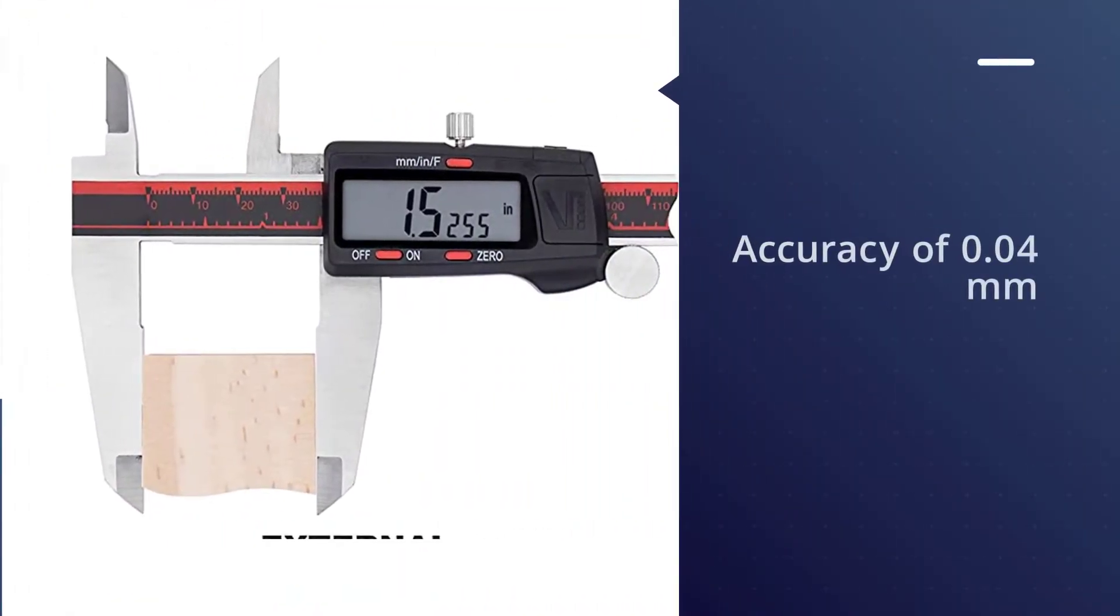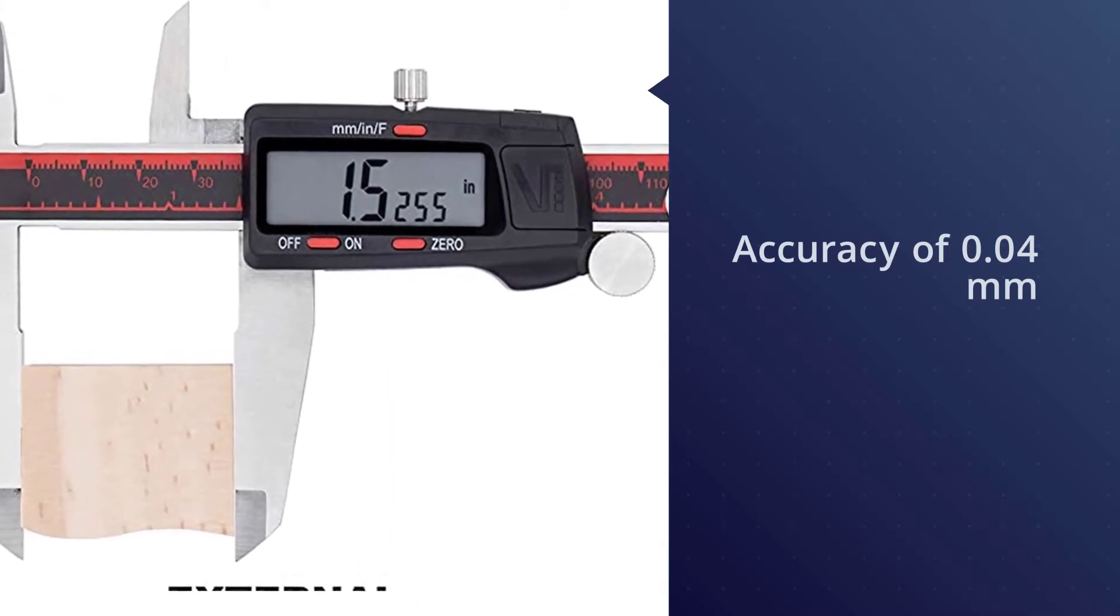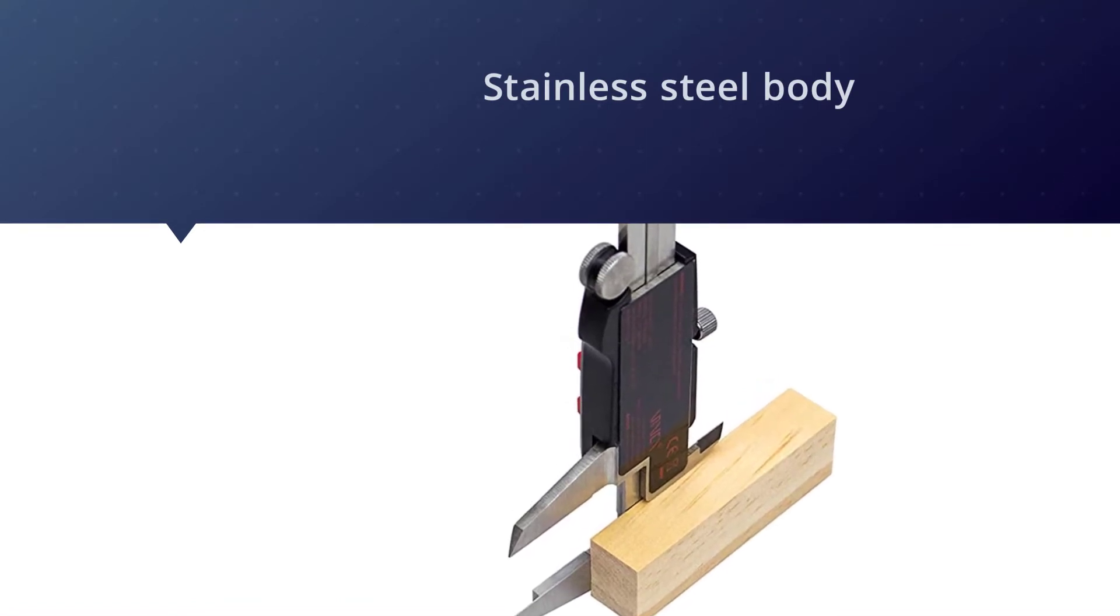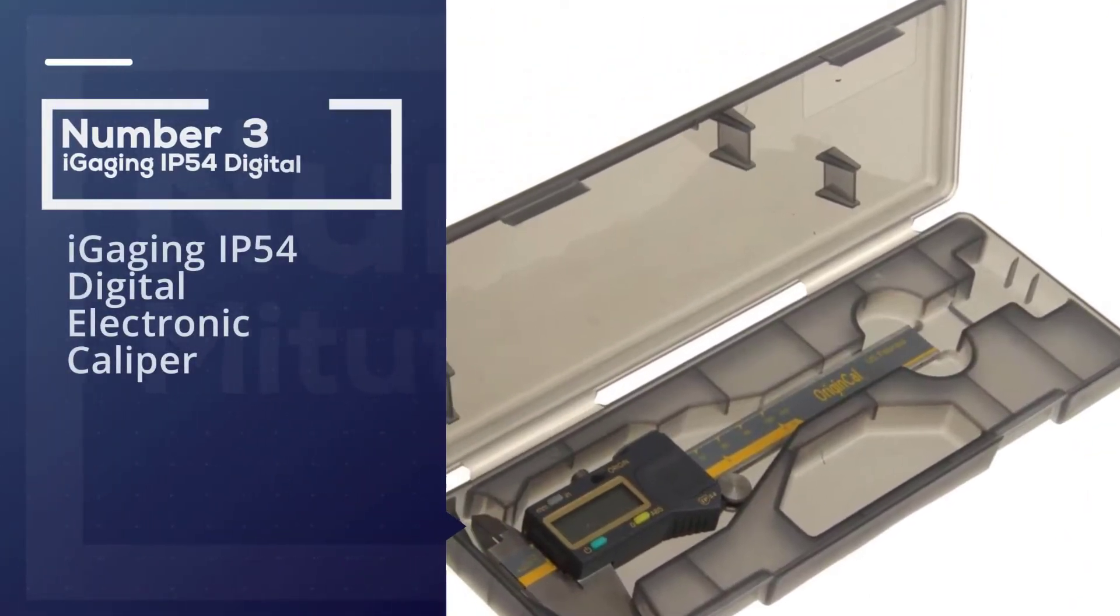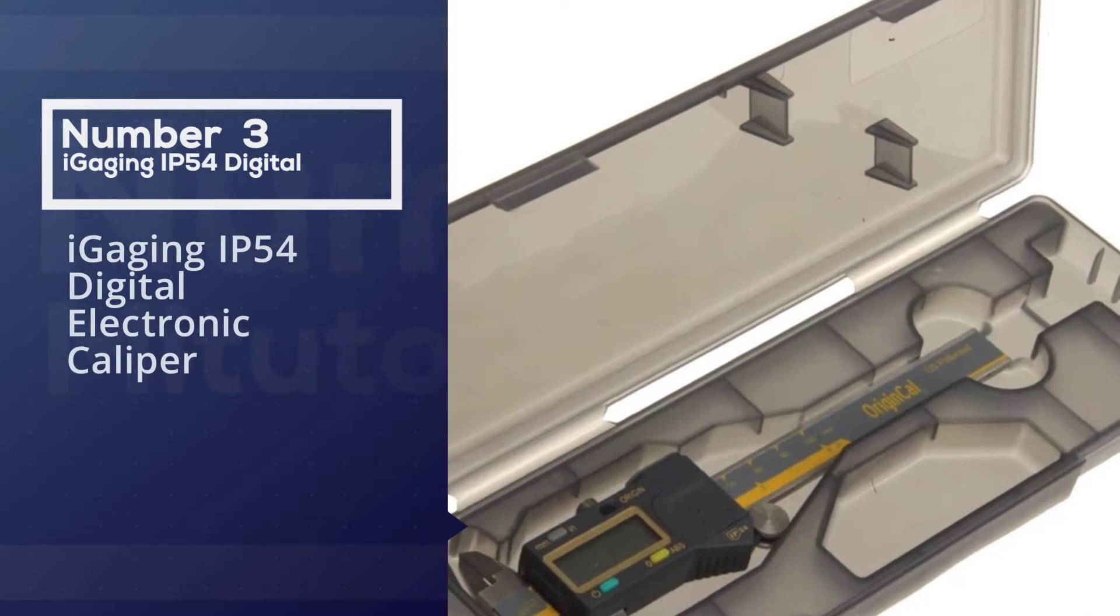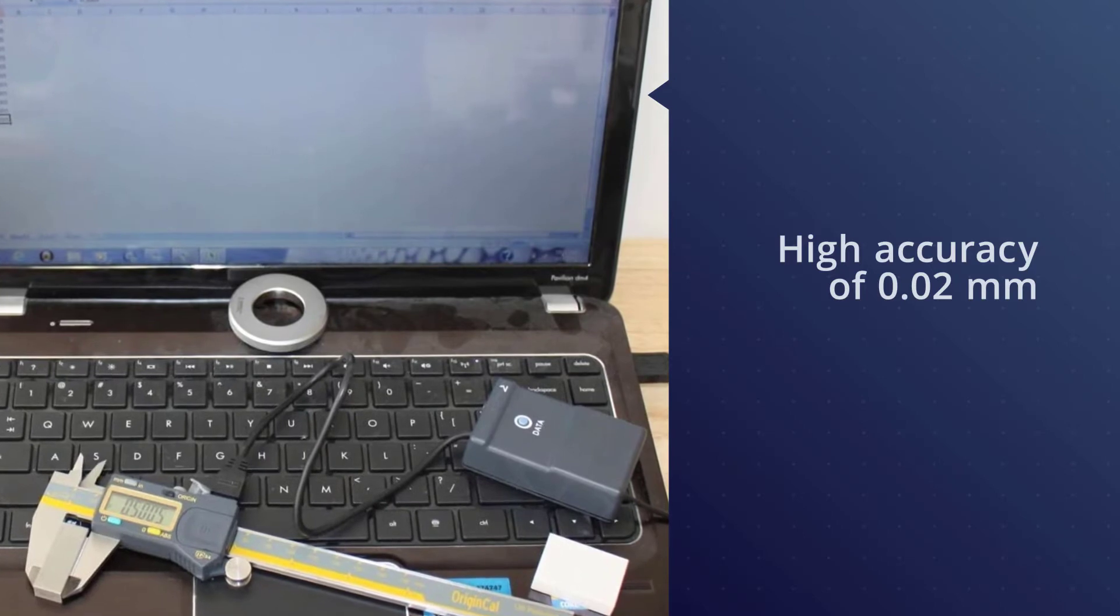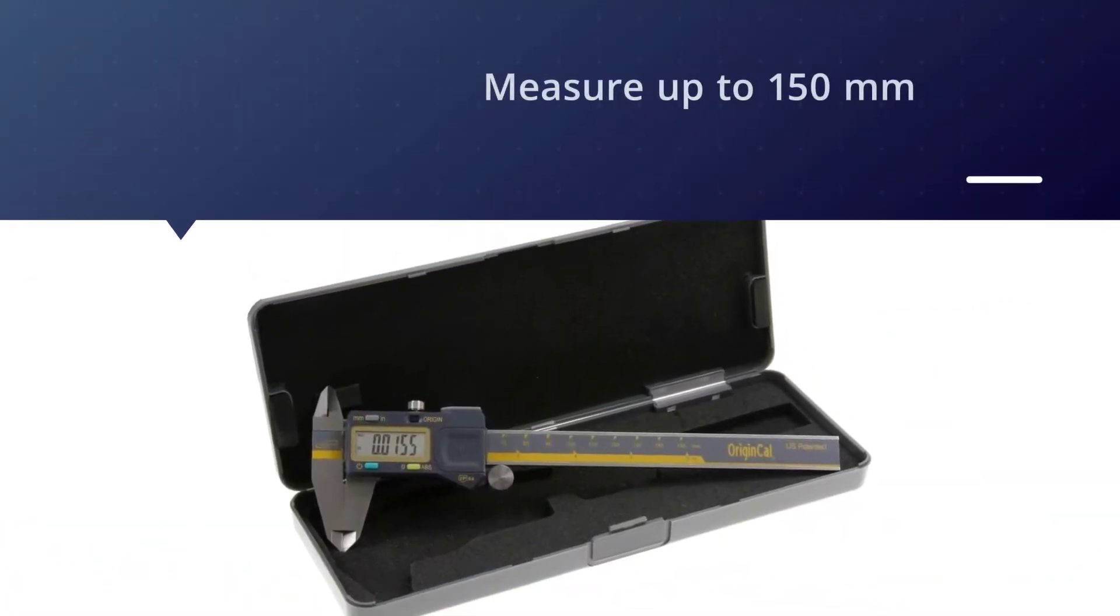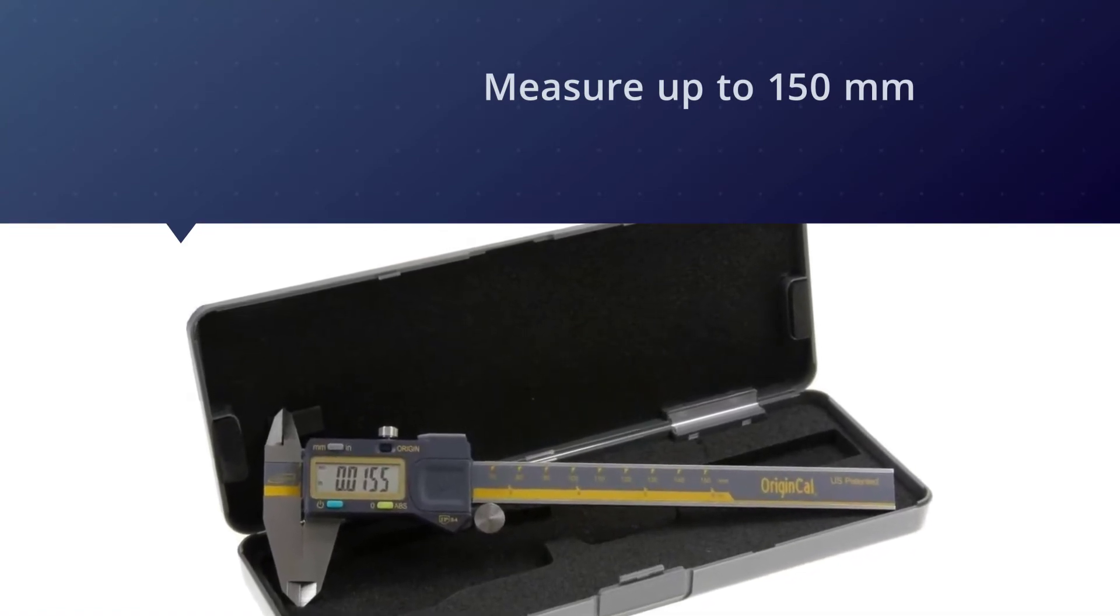Number three: iGaging IP54 digital electronic caliper. In the third position, we're giving you the most reliable digital caliper available in the market. iGaging Absolute Origin 0-6 digital electronic caliper possesses a 0.02mm accuracy, which is good enough for a general-purpose caliper.